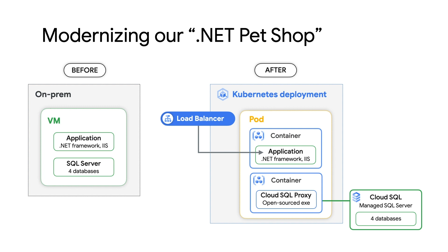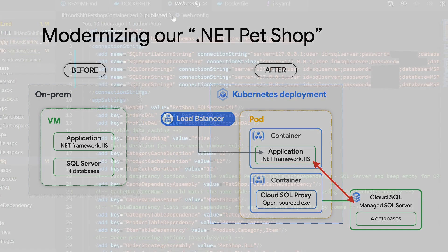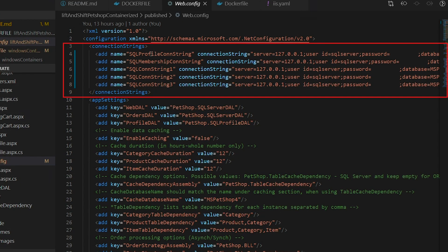Before we deploy the web app, we need to resolve one issue: how to allow the web app to communicate with the databases. Our new architecture is built around containers. We can install the Cloud SQL proxy as a sidecar alongside our web app. This means that the web app and Cloud SQL proxy will be on the same network, and this will allow the web app to communicate with the database using localhost as a server. So we'll need to update the web.config of our web app so it uses localhost in the SQL Server connection strings, and then rebuild our container image and push it to the container registry.